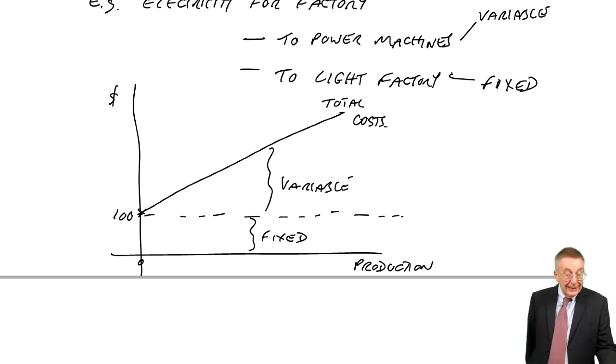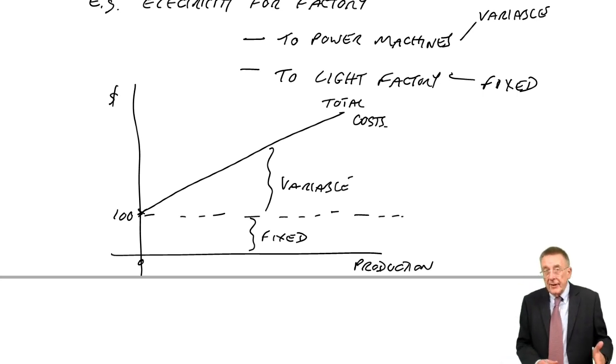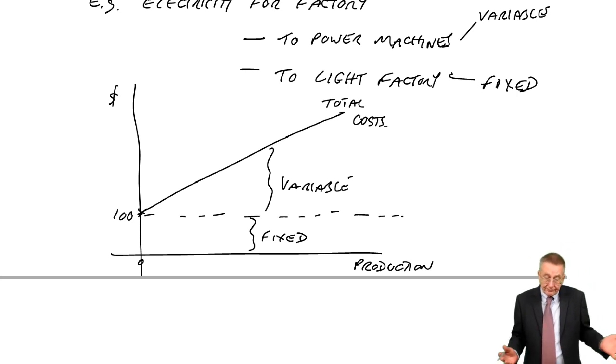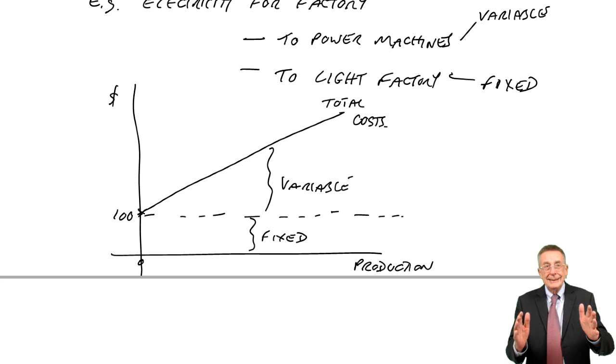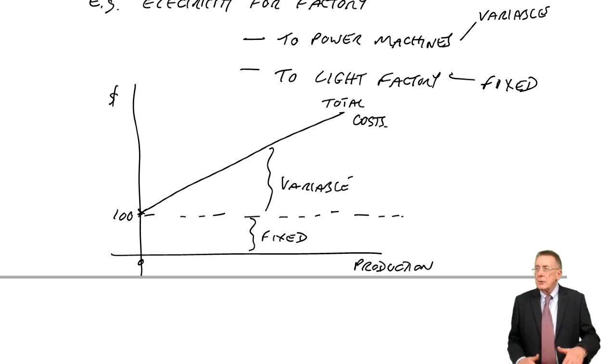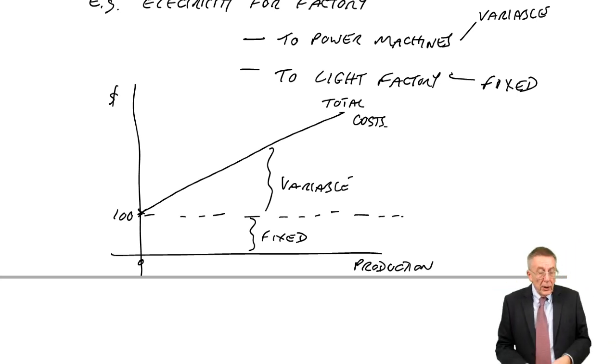To look at a little table. Direct costs, they're variable. Production overheads could be either. Electricity for the machines, variable. Electricity to light the factory, fixed. Rent of the factory, fixed. So they could be either. Non-manufacturing costs, which I'm not really interested in for the moment, but they could be either. The accounts department is likely to be a fixed cost. But things like delivery to the customers, the more you sell, the more you'd expect to be paying for delivery.